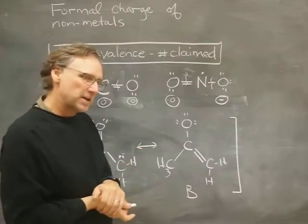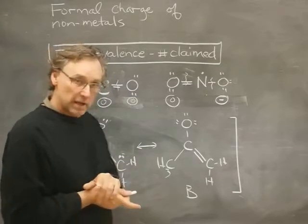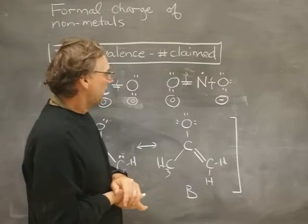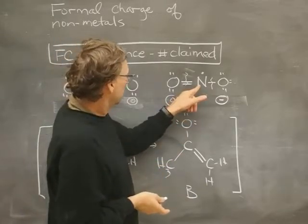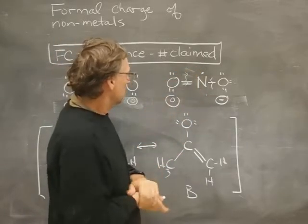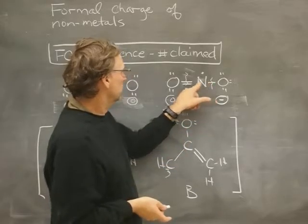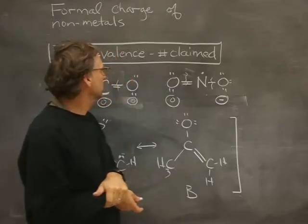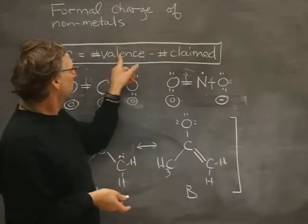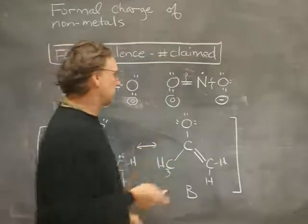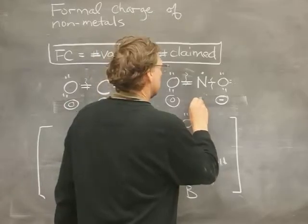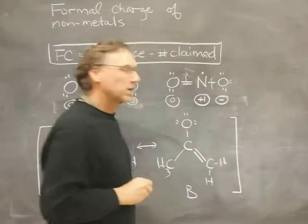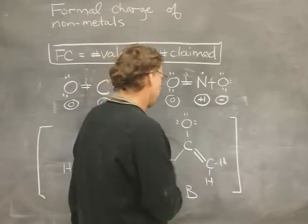How about the nitrogen right in the middle? Nitrogen has a valence of five, so we look at how many it claims. That nitrogen claims the one lone electron up there, two, three, four. This nitrogen is only claiming four electrons. So five minus four is one — it has a formal charge of +1.